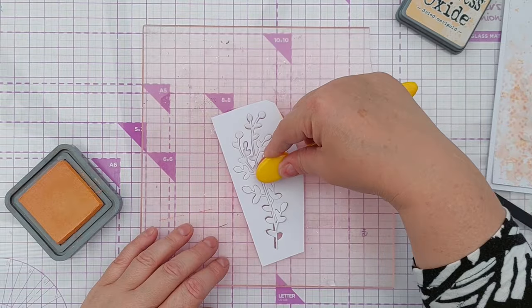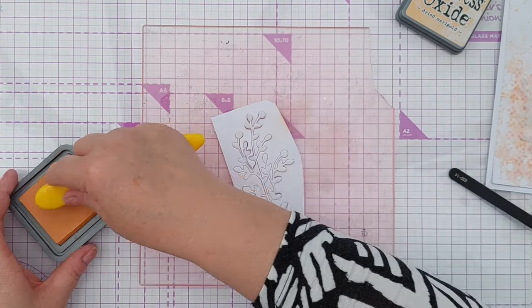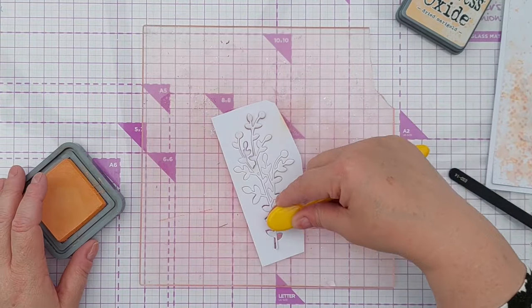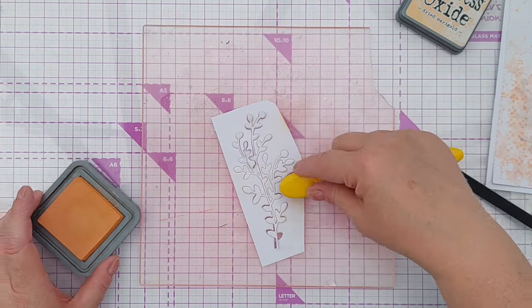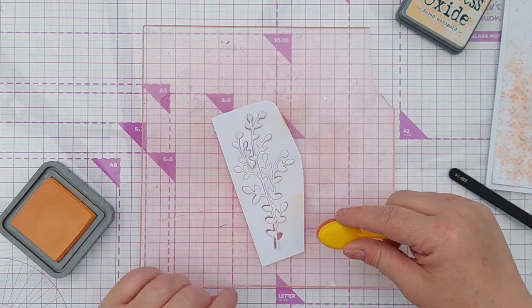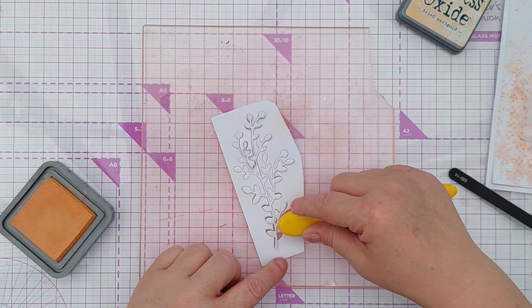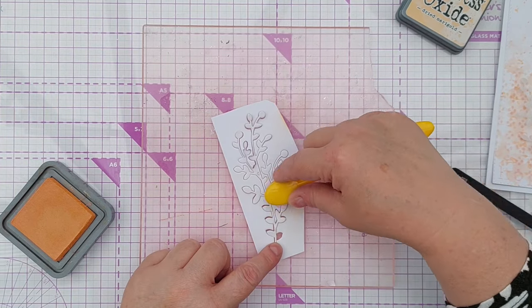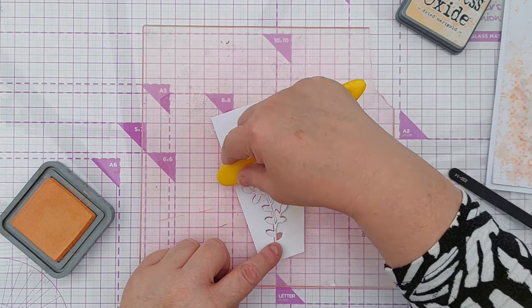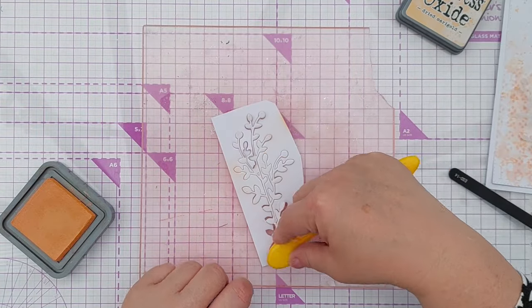I used high tack glue again to stick the vellum branch down to the card and then the white with the ink on it branch on top of that and I do like to use vellum die cuts for layering pieces. They add a bit of softness, a bit of etherealness to the card I think.